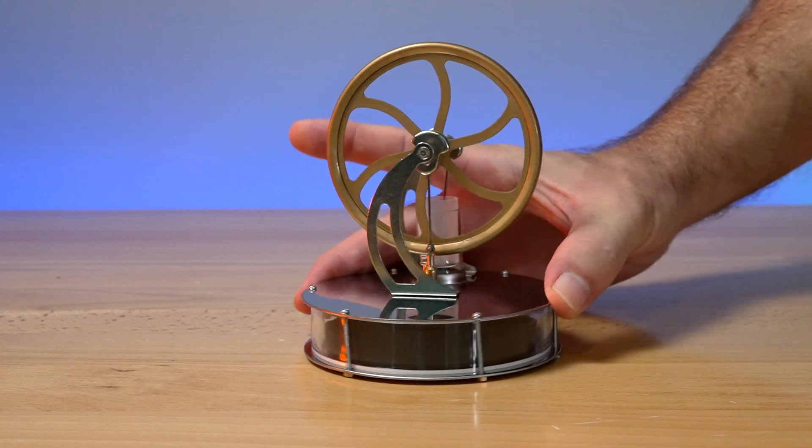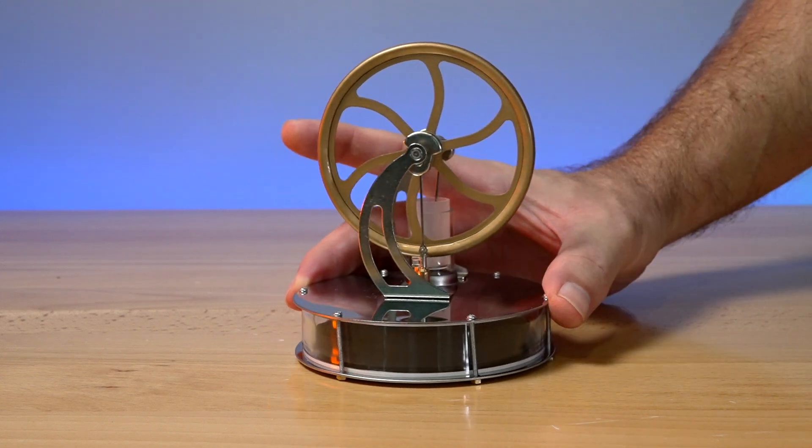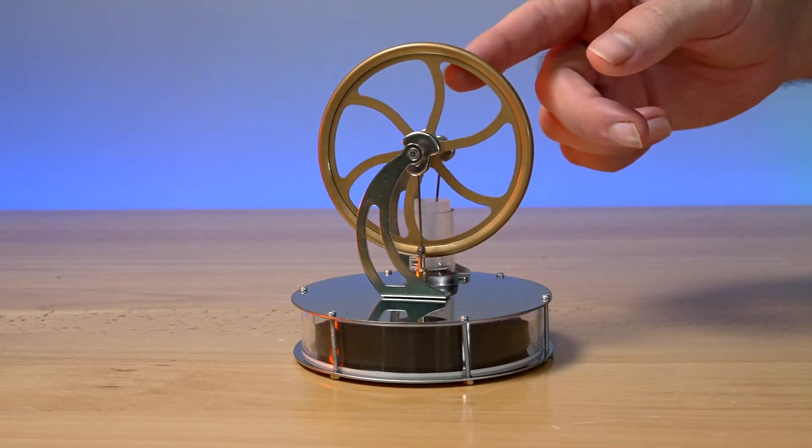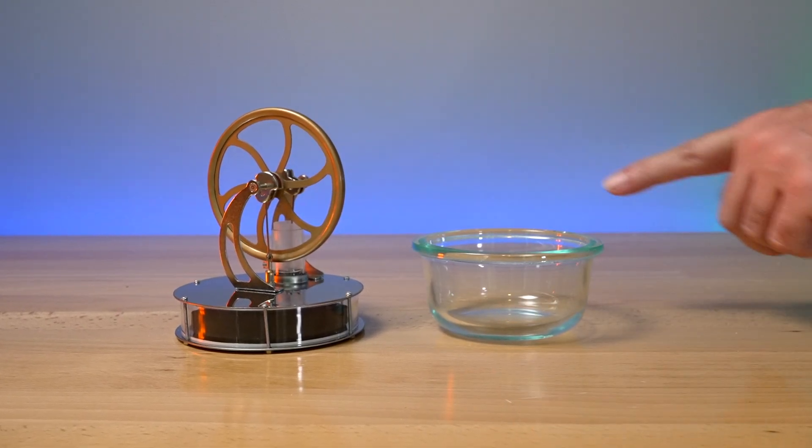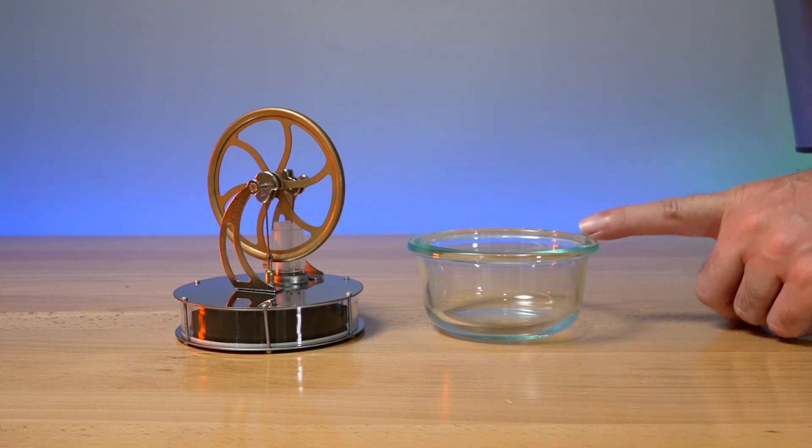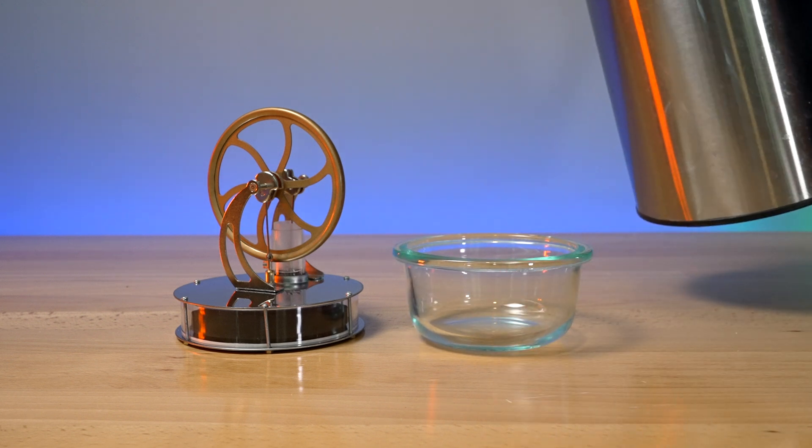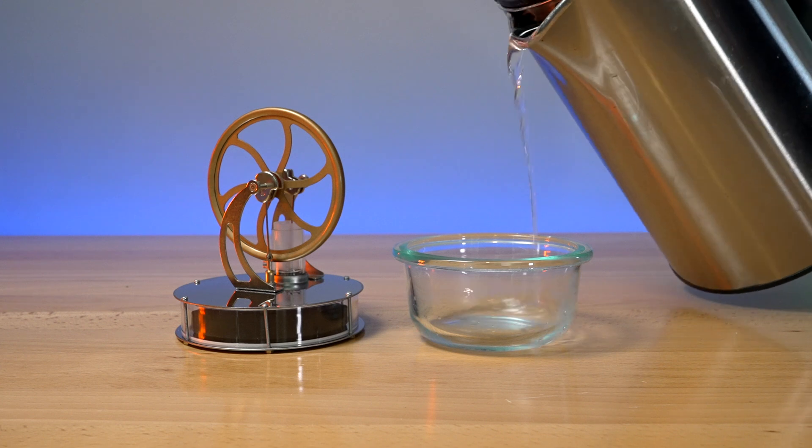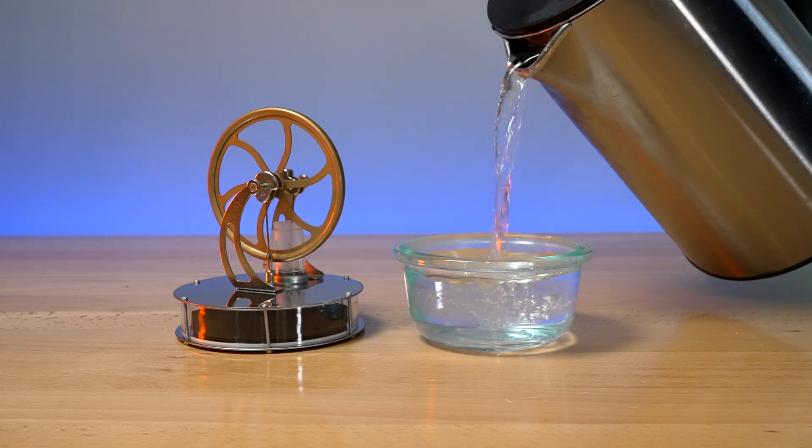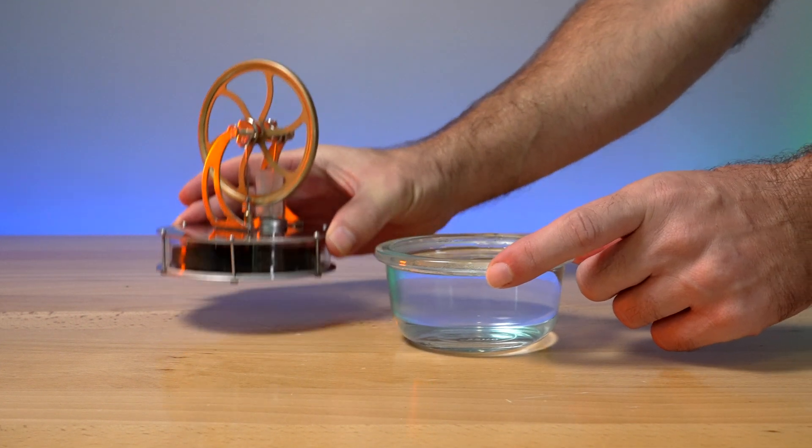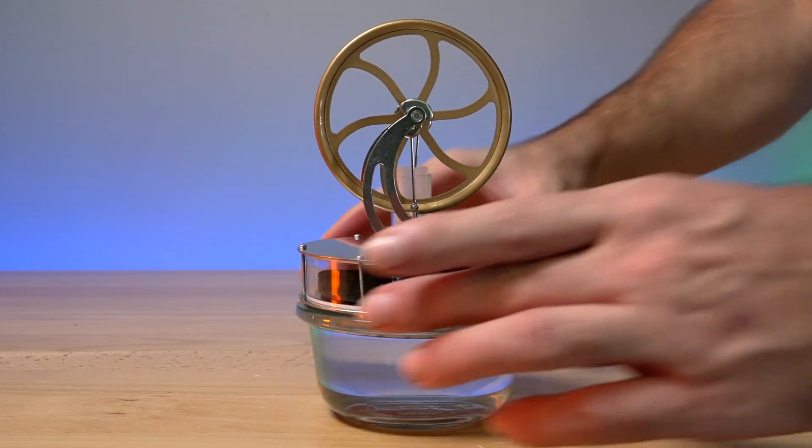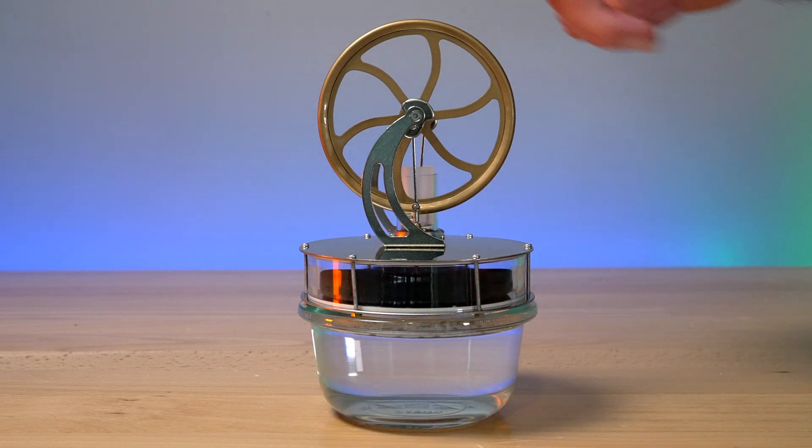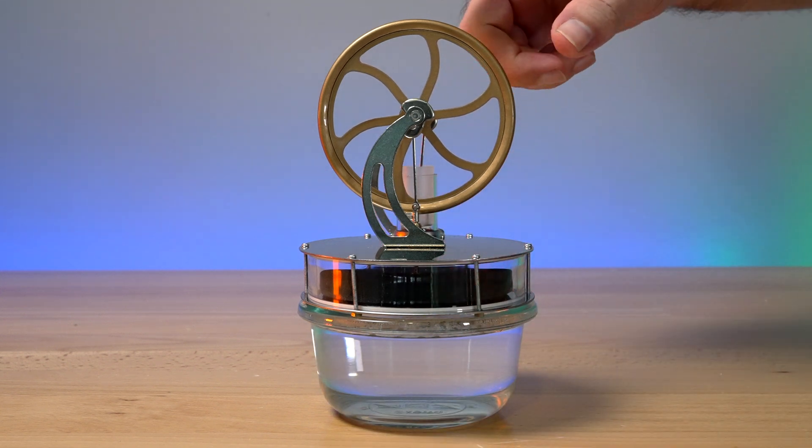So I think for the next part, we need to get some hot water, maybe in a cup, and then we'll set this thing over it and we'll see if we can start it up and get it to run. Alright guys. So instead of a cup, I'm using kind of like a little bowl here that's made out of glass so we can see the water and I got boiling water. So let's go ahead and pour that in there. And so I think all we got to do now is just set the engine on top of that. It seems to fit pretty good here. And we should be able to just spin this up and it should start running. So let's go ahead and try.